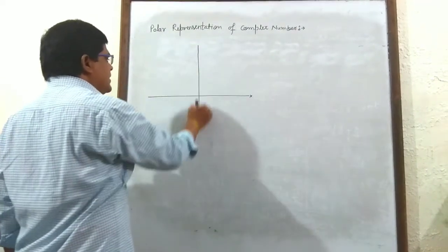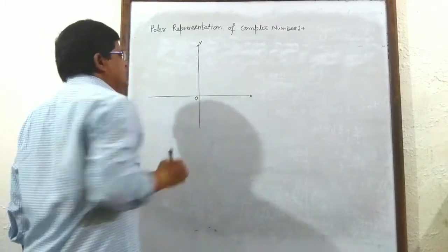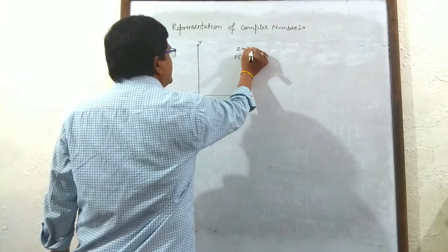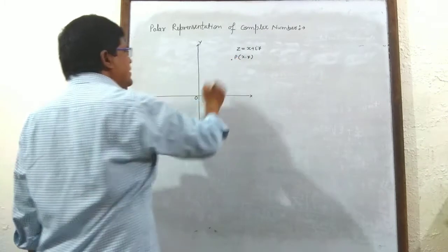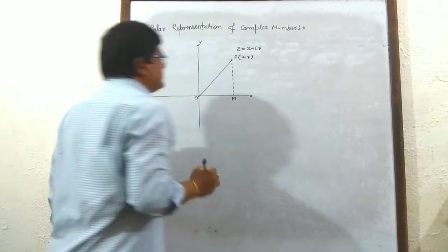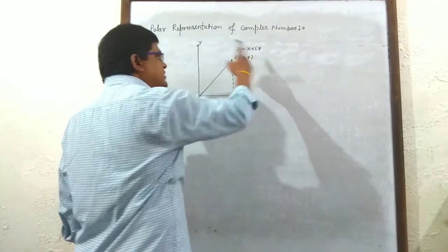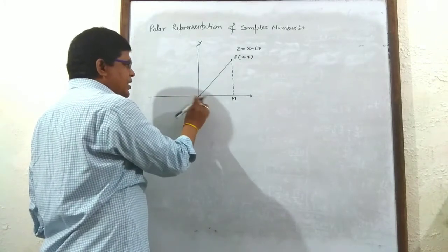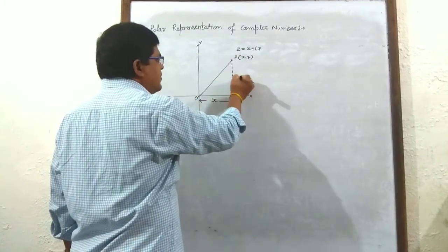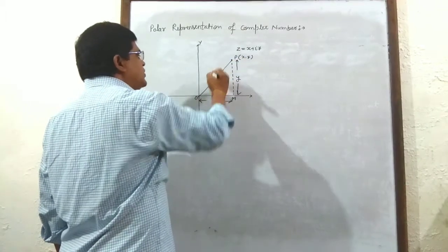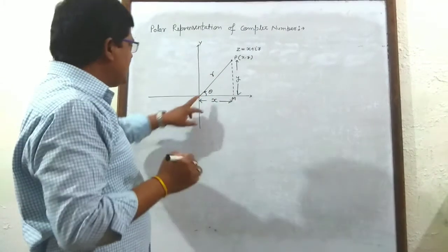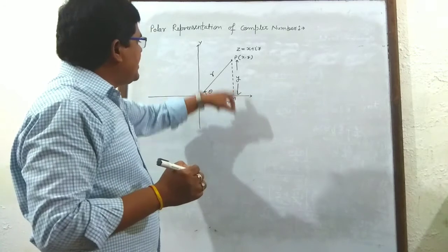Consider the real axis and imaginary axis with O as the origin. Let P be a point with coordinates (x, y), so in complex form z = x + iy. Join OP and drop a perpendicular from P on the x-axis at M. If the coordinates of P are (x, y), then the distance OM = x and the length PM = y. Let OP = r and angle POM = θ. Triangle OPM is a right-angle triangle.